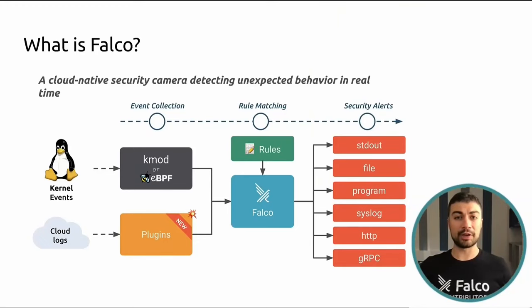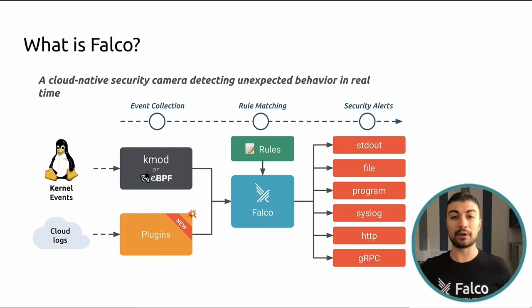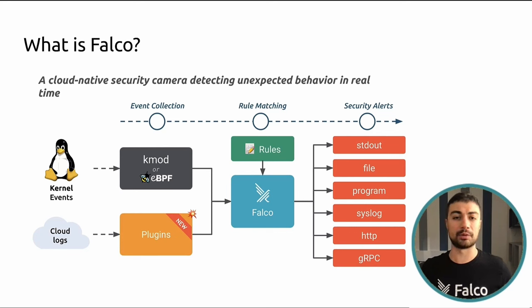Let me give you some context about Falco. Falco is a cloud native runtime security tool incubated by the CNCF, currently attempting to achieve graduation level. Falco monitors everything happening in your system and sends you an alert whenever something suspicious is detected. It is a powerful, efficient, and expressive rule engine for runtime security, observing high-volume streams of security-relevant events collected very close to the edge with minimal resource usage.